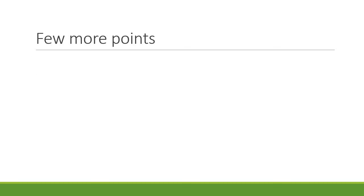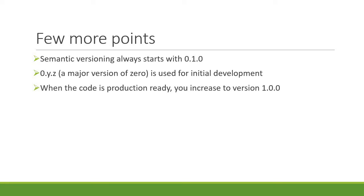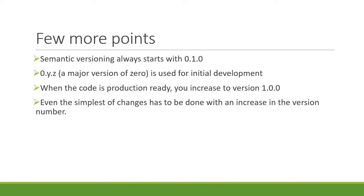Semantic versioning always starts with 0.1.0, because you never start with a patch on a brand new package. A major version of 0 — that is, 0.y.z — is used for initial development. When the code is production ready, you increase to version 1.0.0. At any point in time, even the simplest of changes has to be done with an increase in the version number.